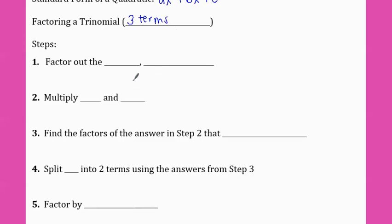Last class we factored four terms. We're going to use this process today to change the three terms into four terms so we can use what we learned last class. So first we're going to factor out the GCF, if possible.